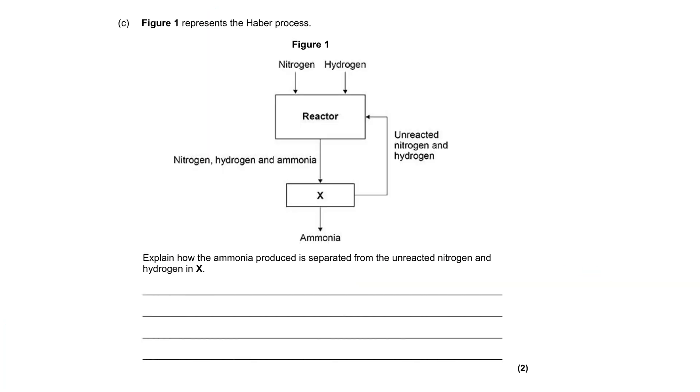Figure one represents the Haber process. You can see that the nitrogen and the hydrogen raw materials are put into a reactor, where there's an iron catalyst by the way, and this is where the Haber process reaction occurs. Because this reaction is reversible, that means we don't get 100% conversion into the ammonia. What comes out of the reactor is the ammonia, of course, but additionally the unreacted nitrogen and hydrogen enters this container X. From this container X, the ammonia is removed, which is what we want. That's what we're going to use to make fertilizers. But then the unreacted nitrogen and hydrogen get pumped back around into the reactor. It gets recycled. This question is asking us how that process occurs. Explain how the ammonia produced is separated from the unreacted nitrogen and hydrogen in X.